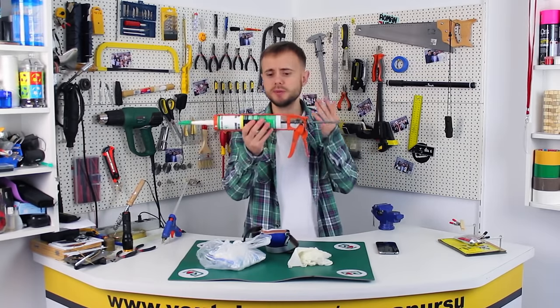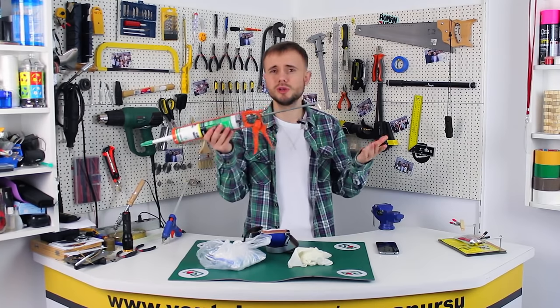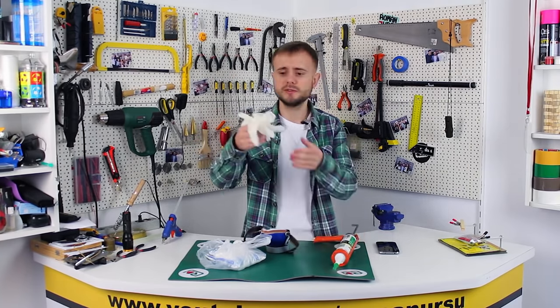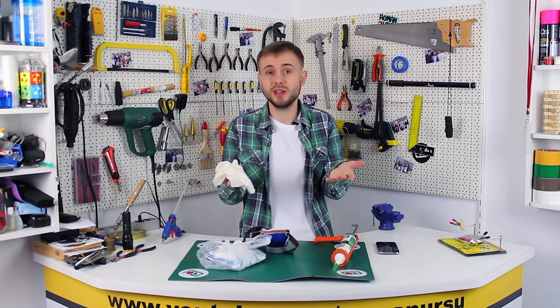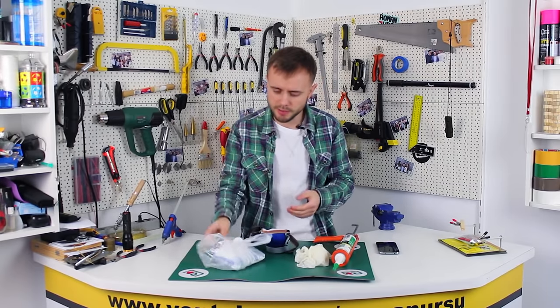To make our phone case we will need the cheapest and simplest construction silicone. You can probably find a tube like this in most construction shops. We also need a pair of gloves, which you can buy at the drugstore, and also a bag of potato starch and a knife.